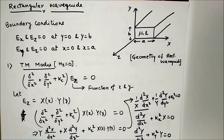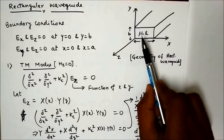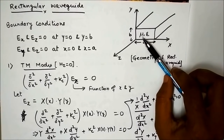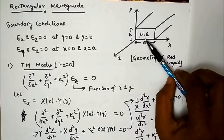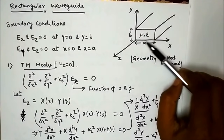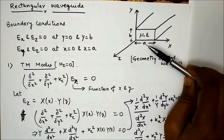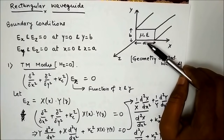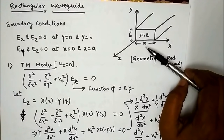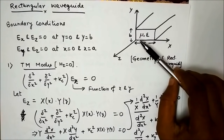We are going to derive expressions for field components in rectangular waveguide. The rectangular waveguide is a rectangular structure made of conductor material, filled with some dielectric material or maybe air. If the cross-section of this waveguide is a rectangle, it is called a rectangular waveguide. Other types include circular waveguide and parallel plate waveguide, which we will see in due course.